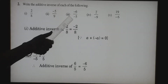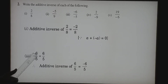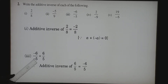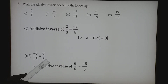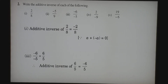The third question: minus 6 by minus 5. Here, the numerator and denominator both have a minus sign. We cancel one minus from the numerator and one from the denominator, so the number becomes 6 by 5. It is a positive rational number, so the additive inverse of 6 by 5 becomes minus 6 by 5.